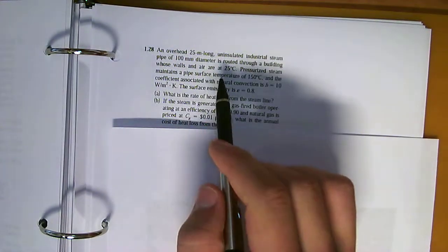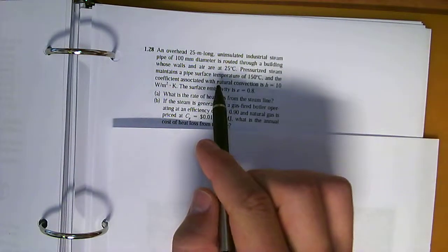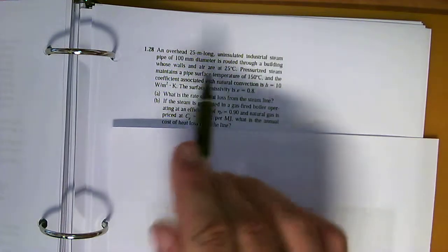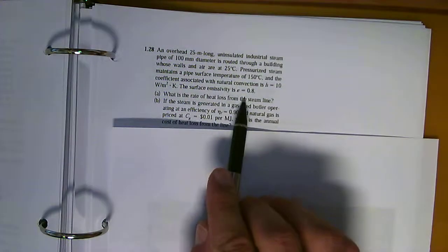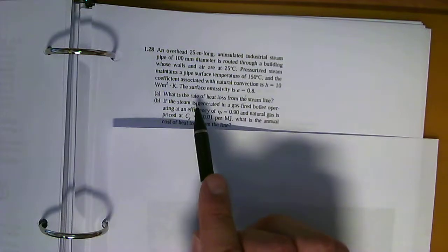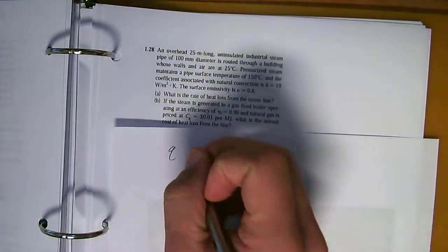We have a pipe with steam inside of it that's radiating heat as well as convecting heat to the air outside of it. We have the surface emissivity and all that other stuff. So what is the rate of heat loss from the steam line? What is the Q total?